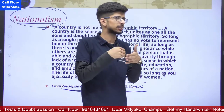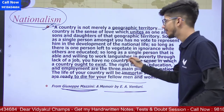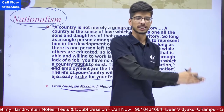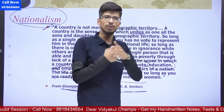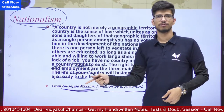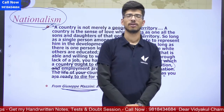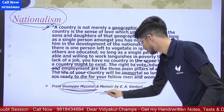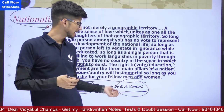Whatever you expect from your government or your nation, Mazzini points to three basic expectations: the right to vote, the right to education, and the right to employment. If you think you should be getting those things from the state, only then should you have the guts and courage to die for your fellow men and women — the fellow men and women living in that same geographic territory. This statement was recorded by A. Venturi, but it was said by Mazzini himself.